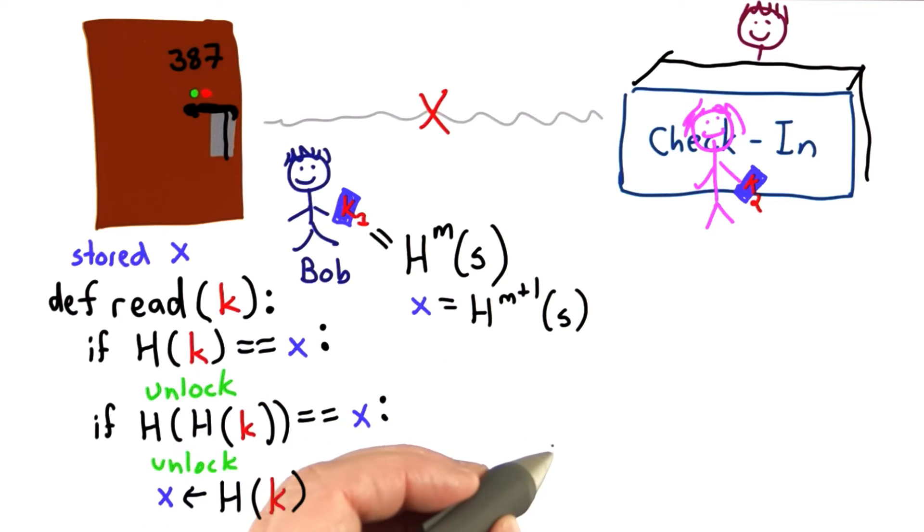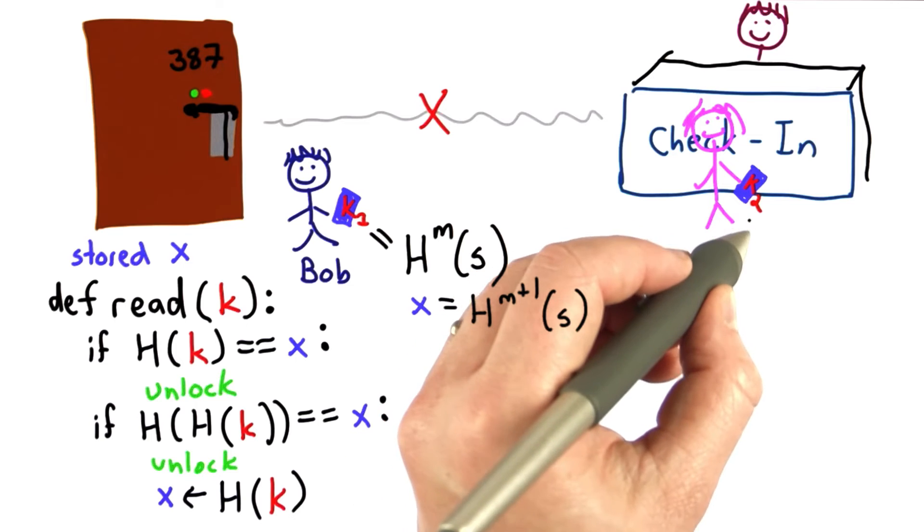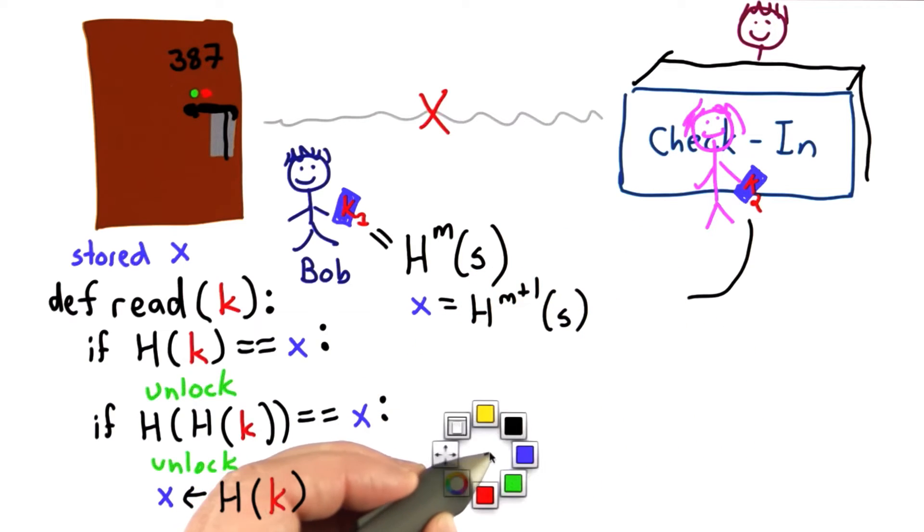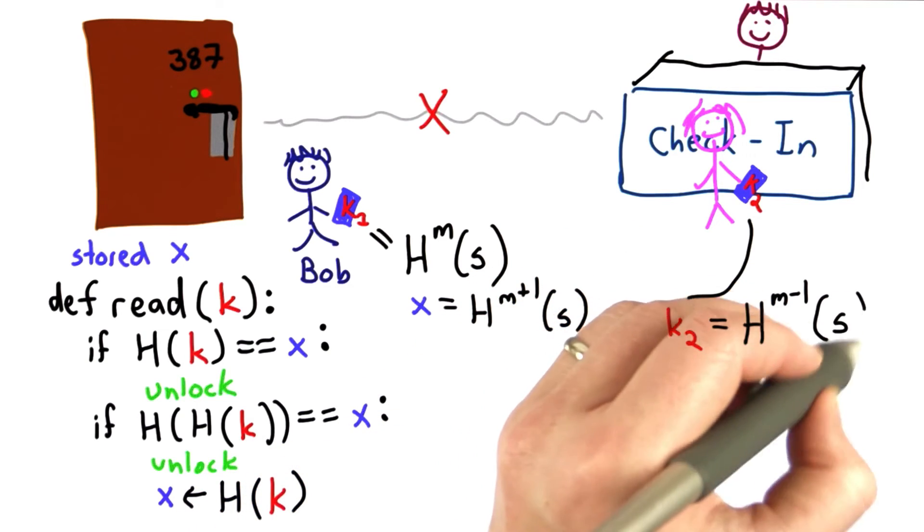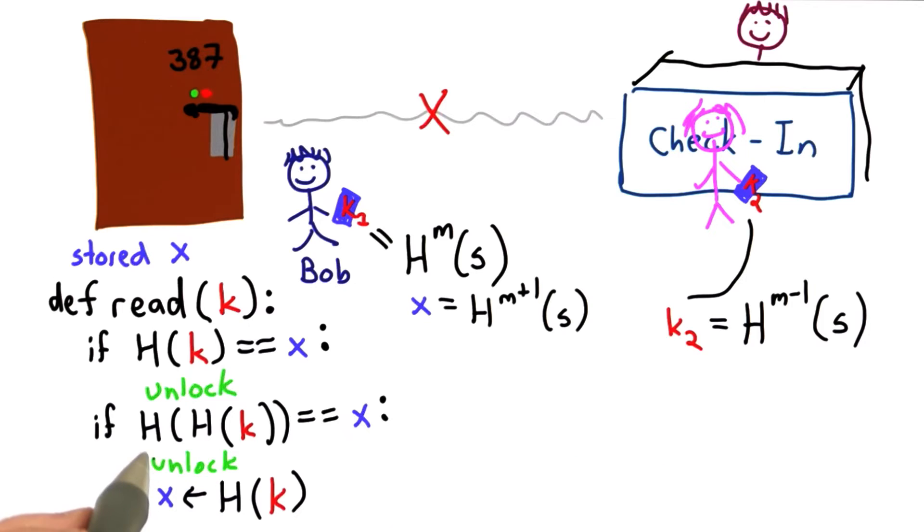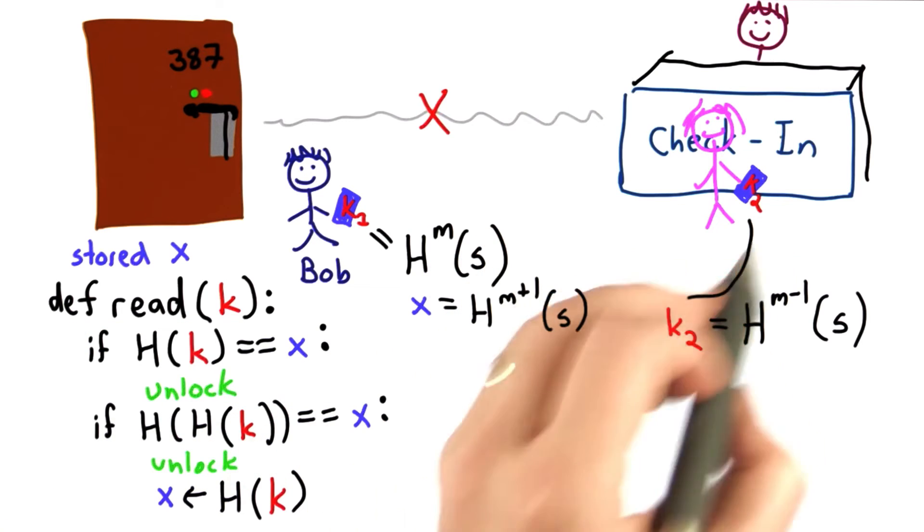Then when it comes time for Alice to open the door, well, Alice's key would have the value one fewer hash of s. That means that the value of the hash of the hash of Alice's key is equal to this value, hashing n plus 1 times starting from s, and that means Alice would open the door. It would change the value of x, so now it no longer works for Bob. But the next person who enters, it will work, and then it will stop working for Alice.